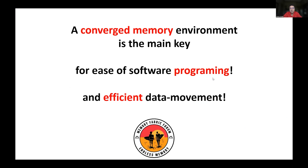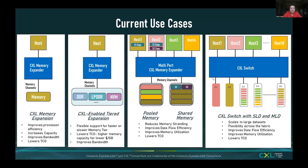The converged memory environment is basically the main key for ease of software programming — that's a lot of friction that people might have. If you ask them to do new work, it will be difficult for it to be adopted. Efficient movement is good for sustainability, it's good for the earth, it's good for time, and it's good for money as well. Memory can be housed within a package and plugged into the CPU, independent of what the CPU natively offers — that is a capability that CXL brings.